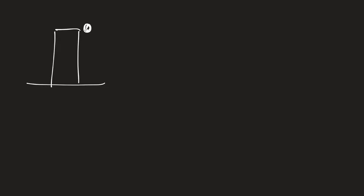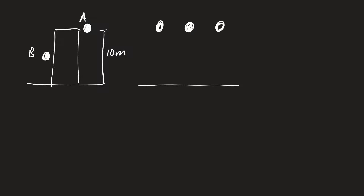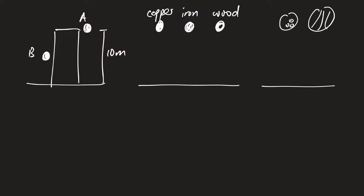Let's take a look at the first example. You have a building and you release two identical compact balls from position A and B, where this height is about 10 meters. Another example involves three compact identical balls — say copper, iron, and wood. The third example is a bowling ball, which is extremely heavy, versus a basketball, released from heights of about 1.5 meters and 2 meters respectively.